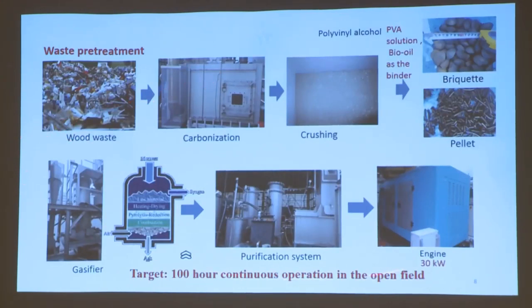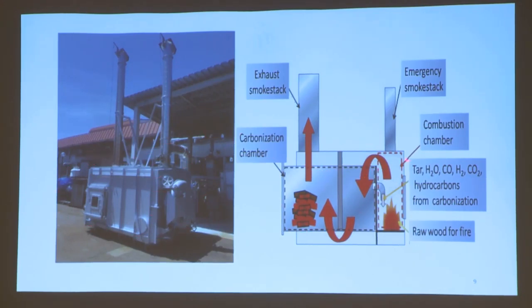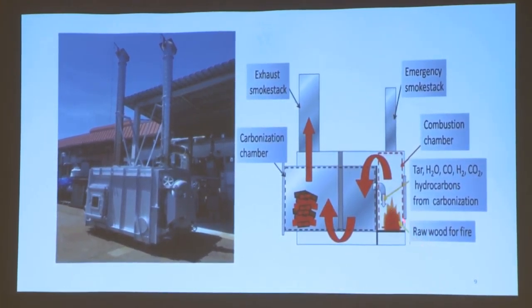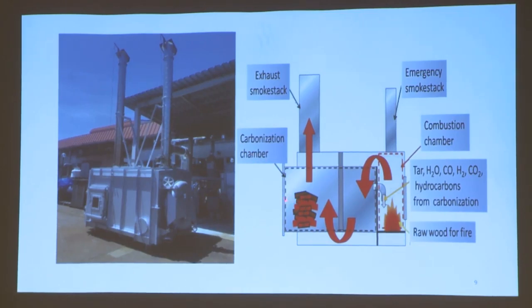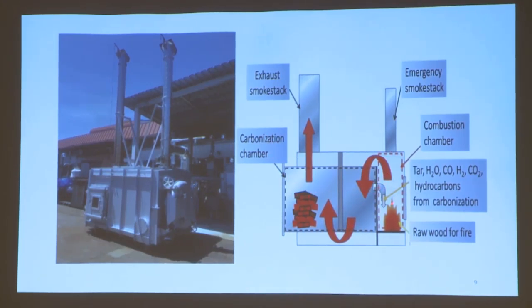This is the whole system. Biomass first experiences carbonization, then crushing and densification. For the carbonization system, the carbonizer consists of two chambers. The left side is the carbonization chamber and the right side is the combustion chamber. At the beginning, we input 10 kilograms of wood for ignition, and the flue gas goes through a heat exchanger for heating the system. We keep feeding wood until the temperature of the carbonization chamber reaches around 200 degrees C. Then volatile matter releases from the carbonization chamber, and this combustible gas enters the combustion chamber for burning. This heat is utilized for further heating, and at that point no more wood is needed — making it almost an energy-free system.